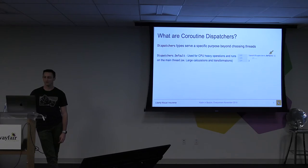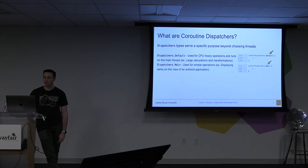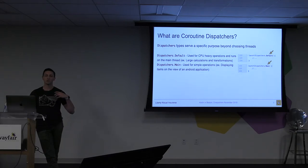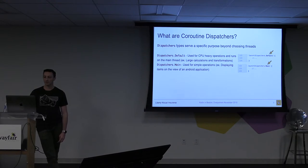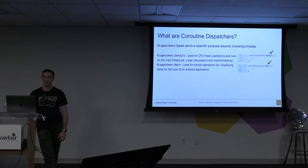Diving into dispatchers: there are multiple types and each one performs its own specific job. The first is the default dispatcher, used for CPU operations on the main thread — examples are calculations and data transformations. On the right you can see how you tell the coroutine builder which dispatcher it should use. The next is the main dispatcher, used for simple operations — for Android that would be the view.